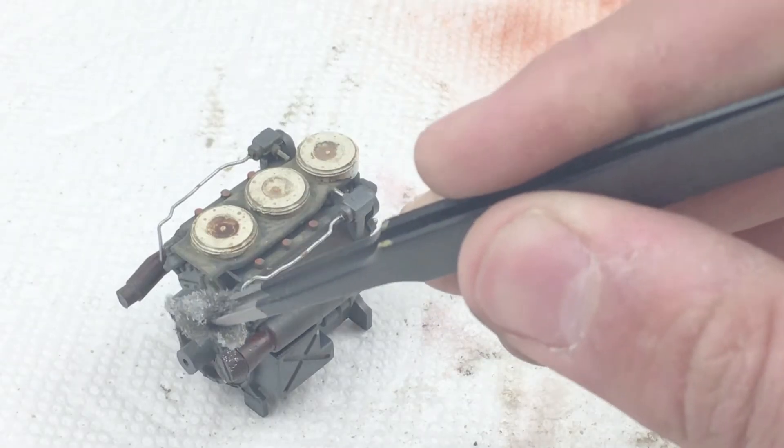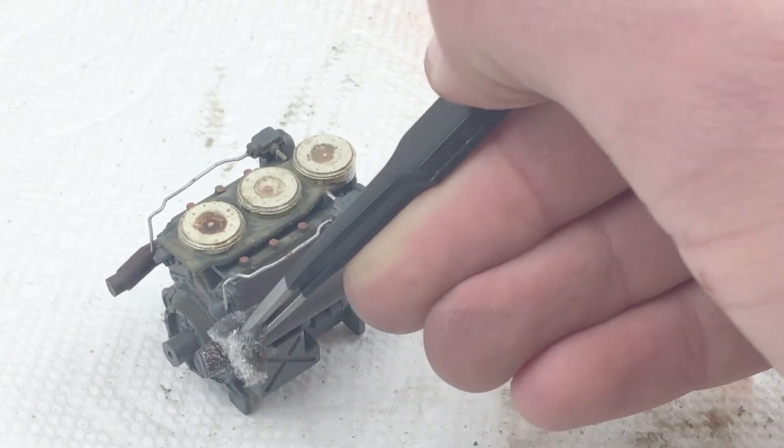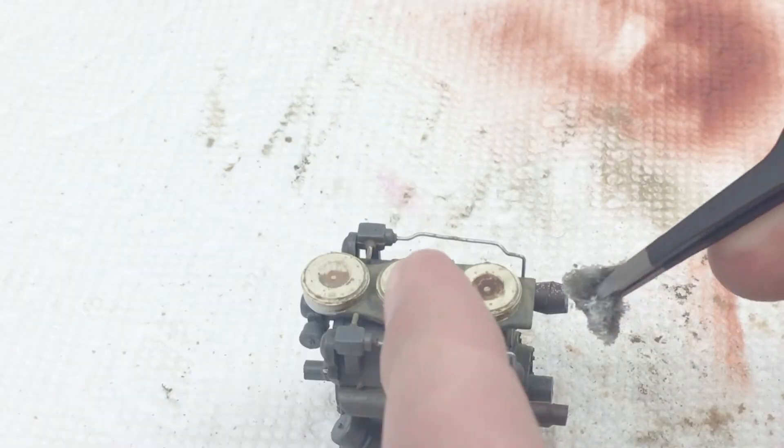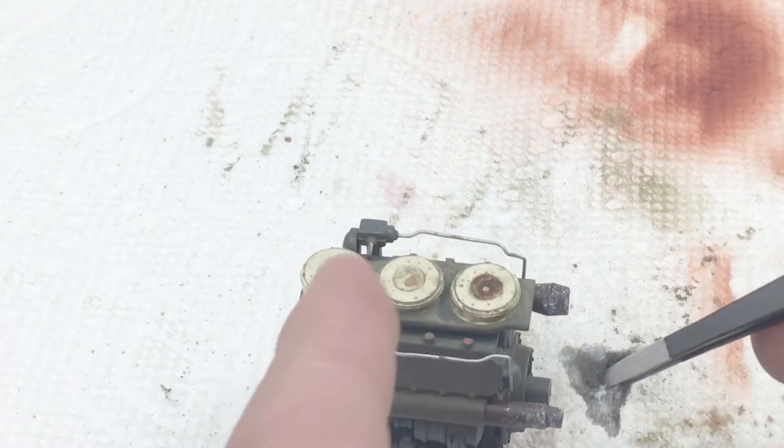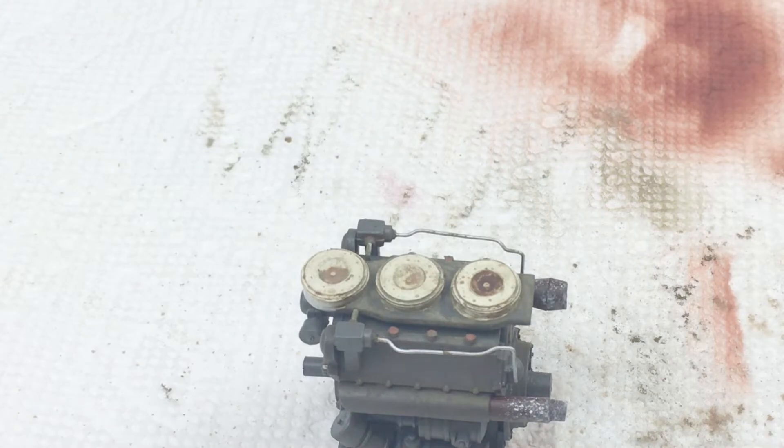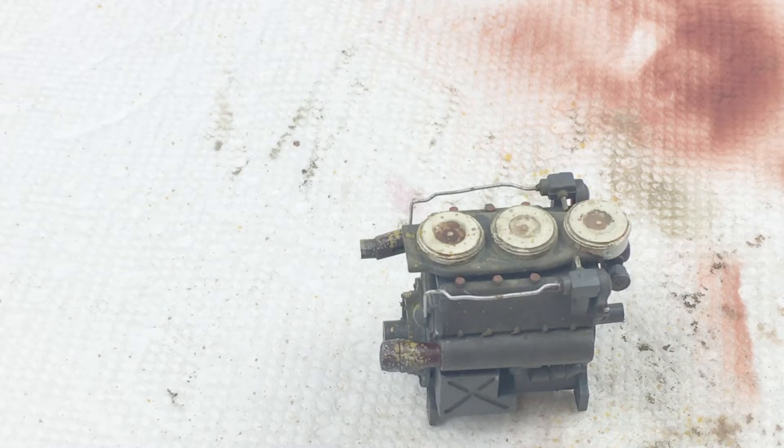For the exhausts, I painted them Vallejo Dark Rust, and then blended some burnt sienna oil paints into it. After that, I sponge chipped it with ivory to give it some more texture, and after some more oil paints, we'll simulate scorched metal. I followed that up with some raw sienna oil speckling, which I then blended out to tone them down.